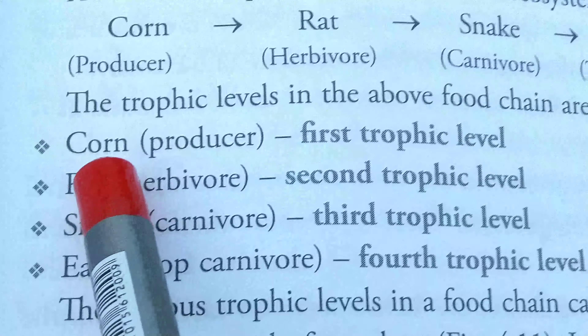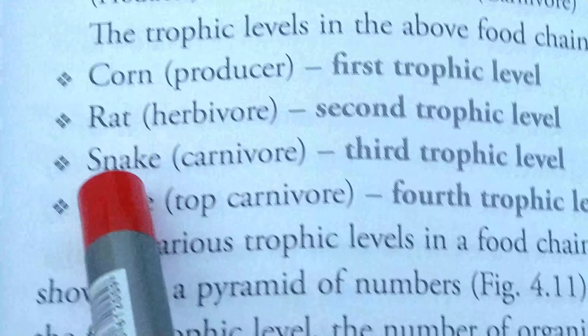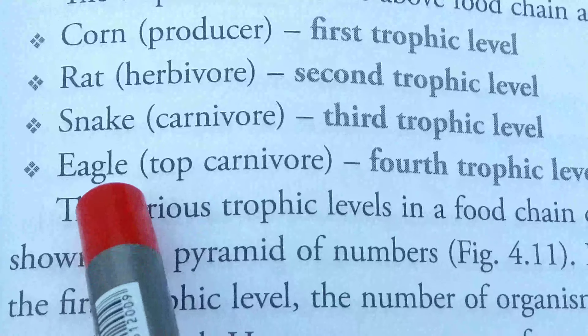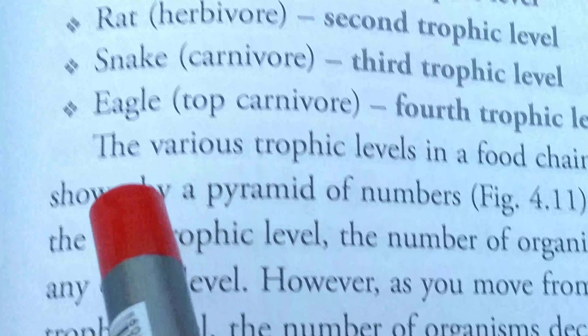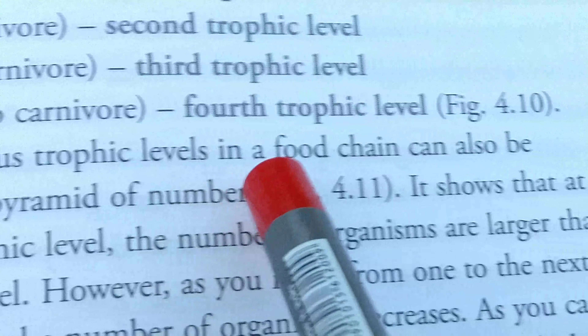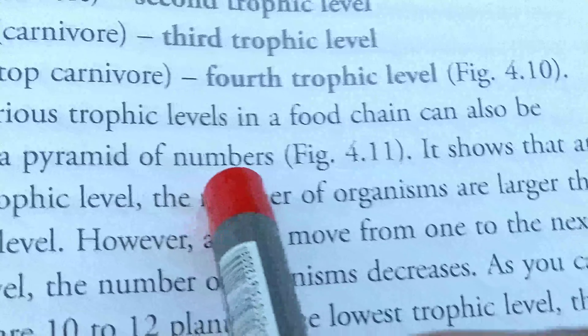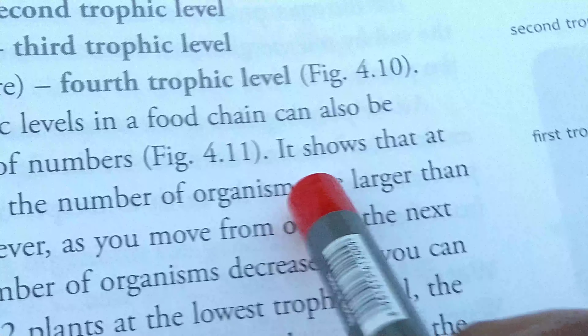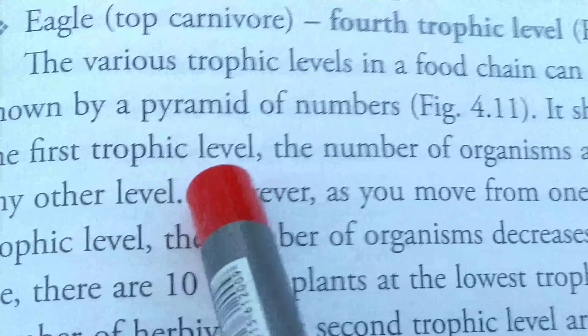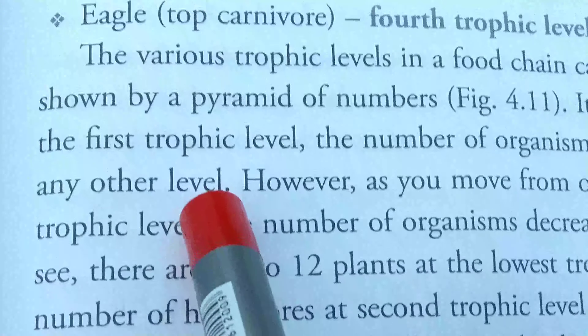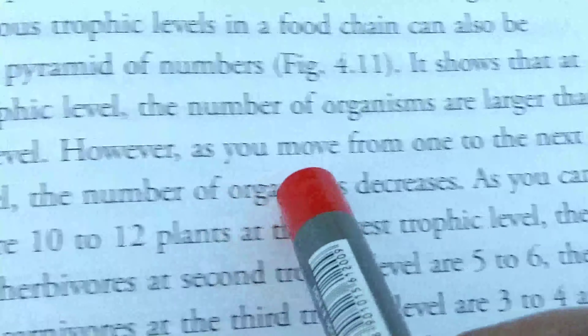Look at the figure here. The first Trophic Level consists of producers, meaning green plants, those who are able to produce their own food. Then primary consumers, then secondary consumers, and the last one is tertiary consumers or top carnivores. Normally as you go up to the next level, the level is smaller and the amount of food and energy transferred also decreases.